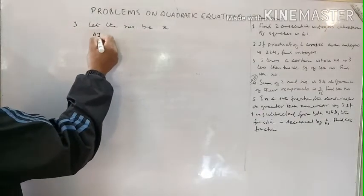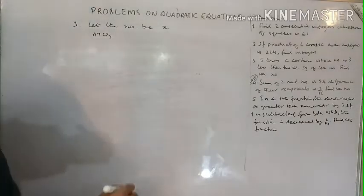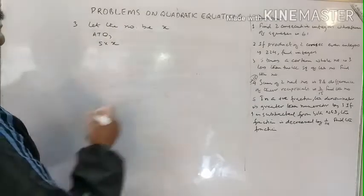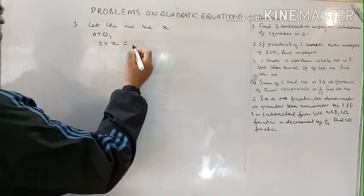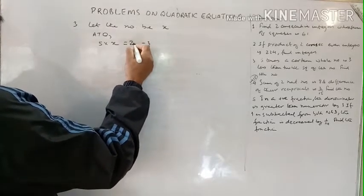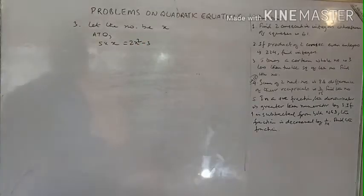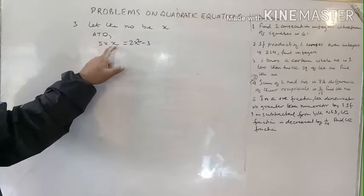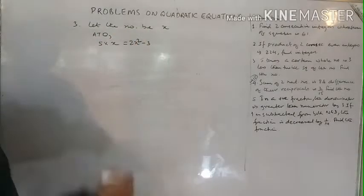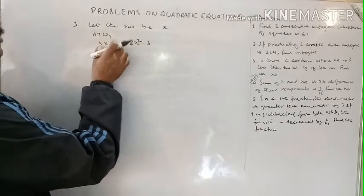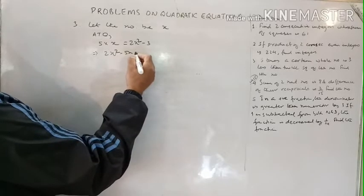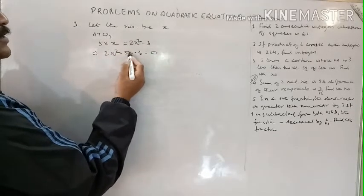According to the question: five times a certain whole number equals three less than twice the square of the number. So 5x equals 2x squared minus 3. Since x squared is on the right side and positive, bring terms to the right-hand side, giving 2x squared minus 5x minus 3 equals 0.